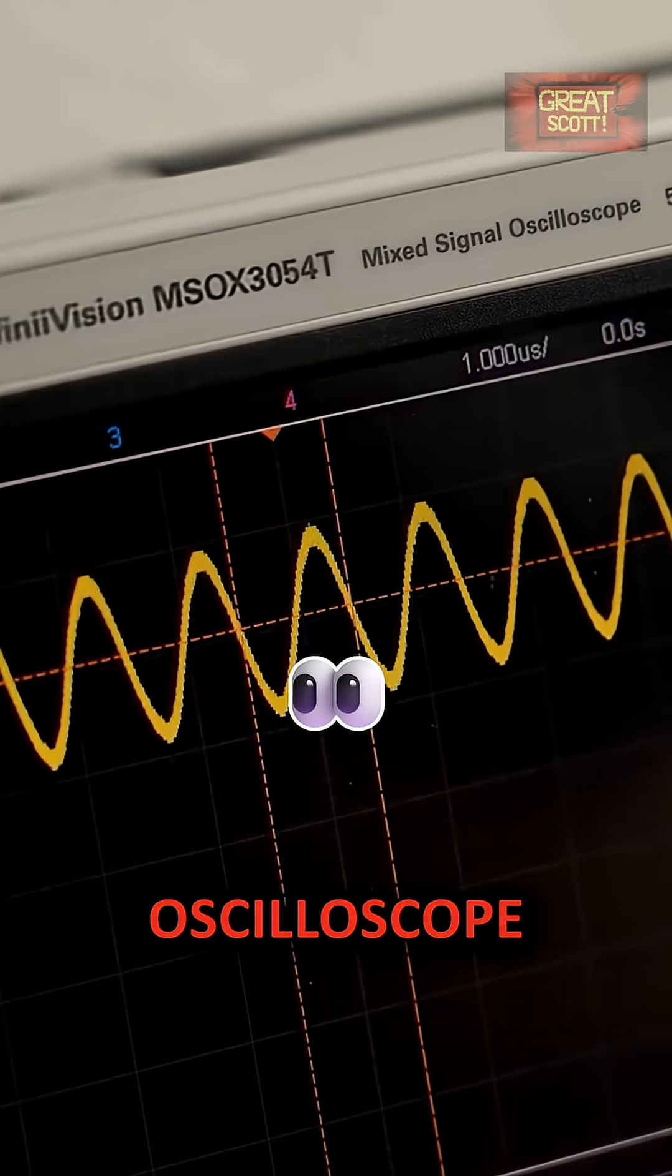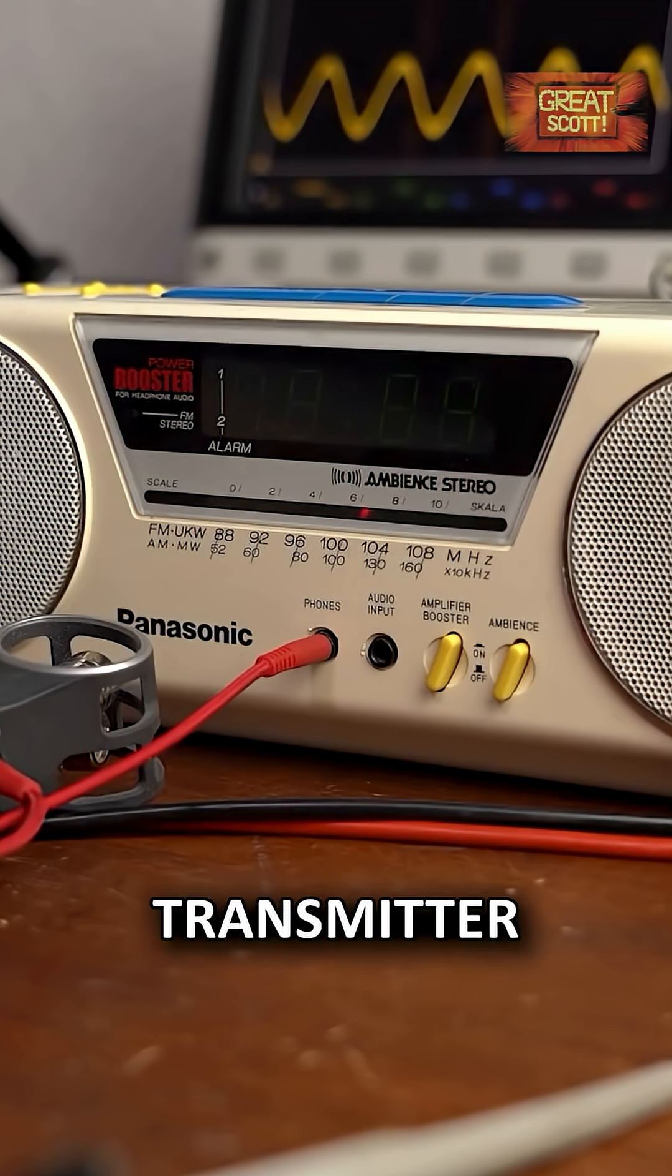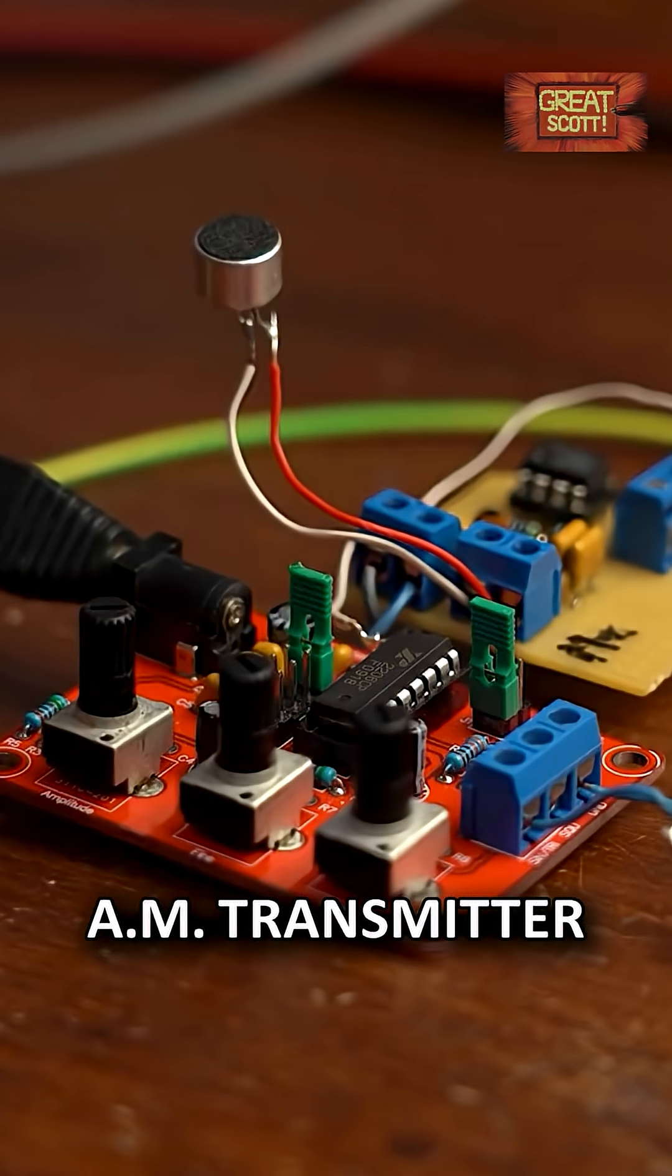And as you can see on the oscilloscope and here through the radio, the AM transmitter seems to be perfectly fine. We got a functional AM transmitter.